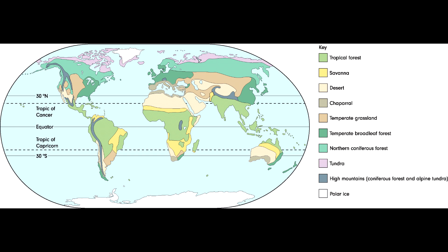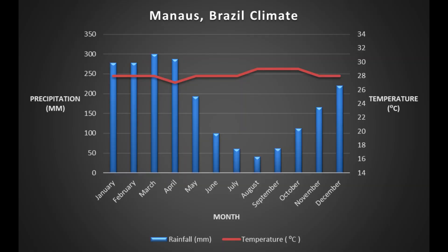Tropical rainforests are found in Central and South America, Central Africa, Southeast Asia and Northern Australia. This is an example of the climate data from Manaus in Brazil. We see very consistent temperatures throughout the year — no extreme heat or extreme cold, staying just under 30 degrees throughout the entire year.